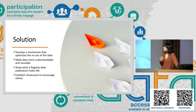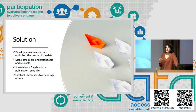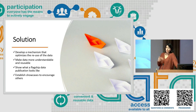What we propose in this project is to develop a mechanism that optimizes the reuse of data and makes data more understandable and reusable for users. By implementing this mechanism on a few sample flagship datasets at ITC, we provide a strong incentive for researchers. When they see in practice the benefits of data publication, they get more incentive to start publishing their own data.